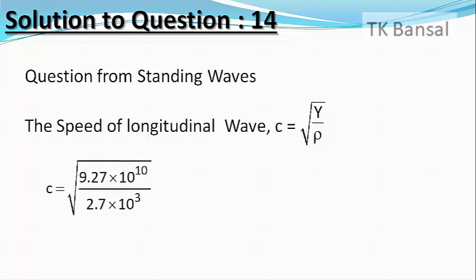So c equals the square root of 9.27 × 10¹⁰ divided by 2.7 × 10³, which on calculation gives me 5.86 × 10³ meters per second.